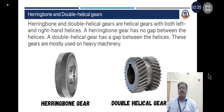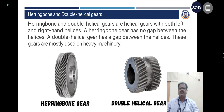Herringbone and double helical gears are helical gears with both left and right hand helices. A herringbone gear has no gap between the helices, whereas a double helical gear has a gap between the helices. These gears are mostly used on heavy machinery.